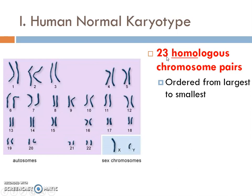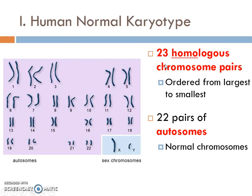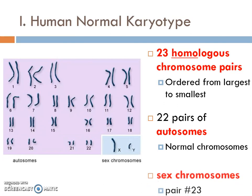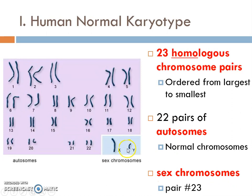We have some names for the pairs. The first 22 pairs are called autosomes — they are the normal chromosomes, containing genes for things like hair color, eye color, and height. Then we have the last pair, X and Y, which are called the sex chromosomes, and they'll be one of our major focuses today.